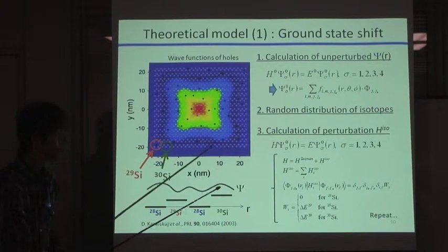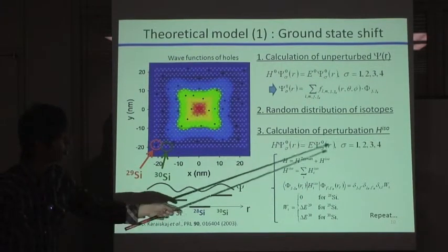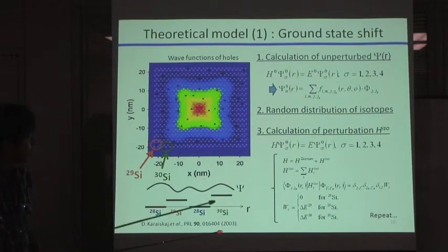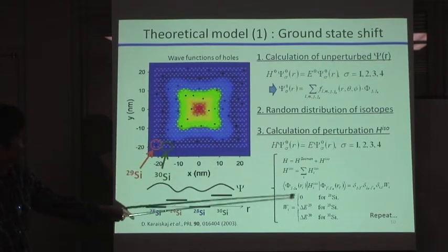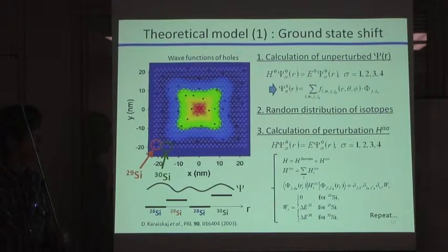We assumed there, we assumed, the total ground state shifting can be obtained by the integration of local, as a product of local shifting and local existing probabilities, as written as follows. And after that, we repeat this whole procedure, more than 20,000 times, to obtain the energy distribution as an ensemble.